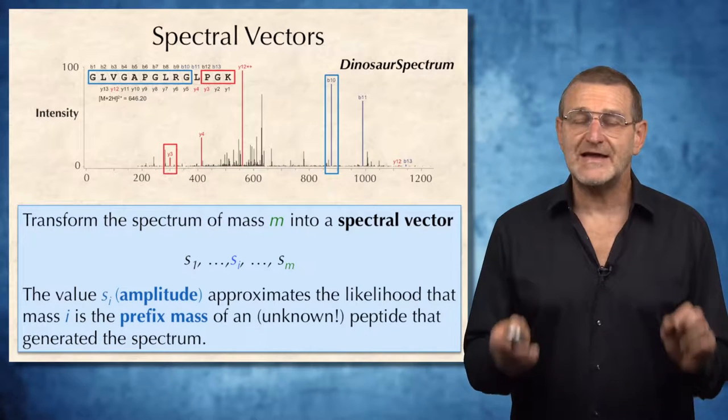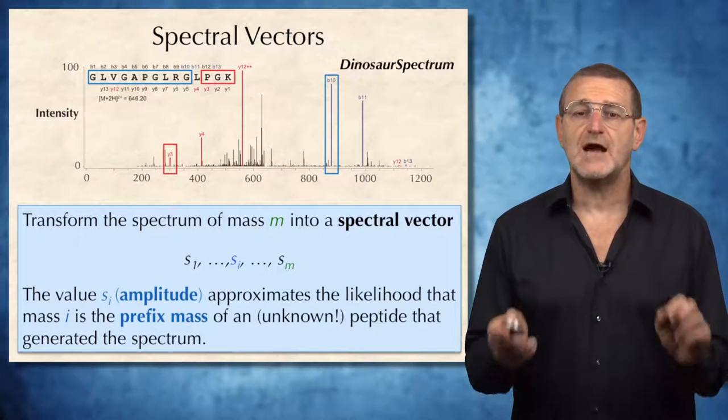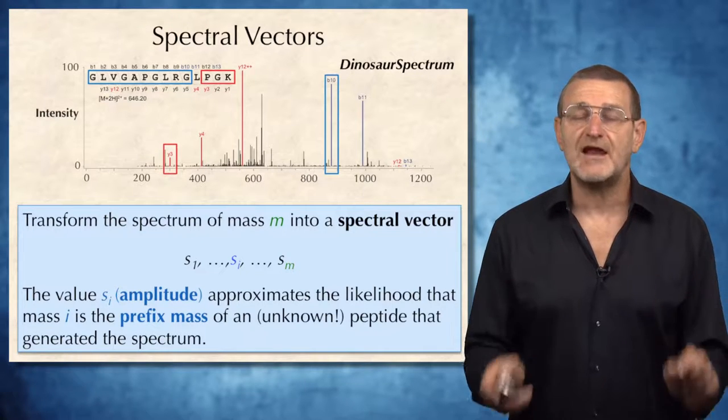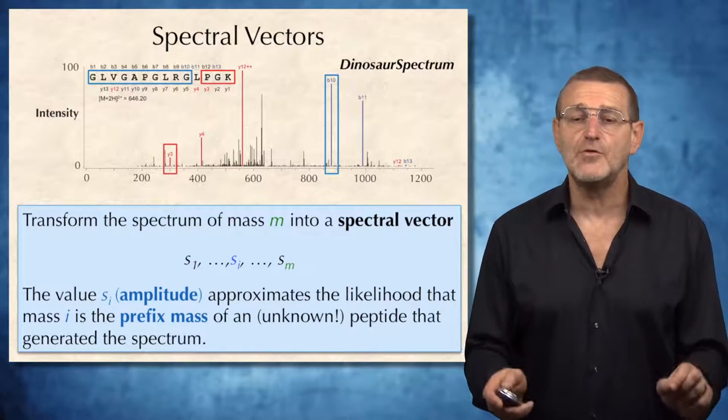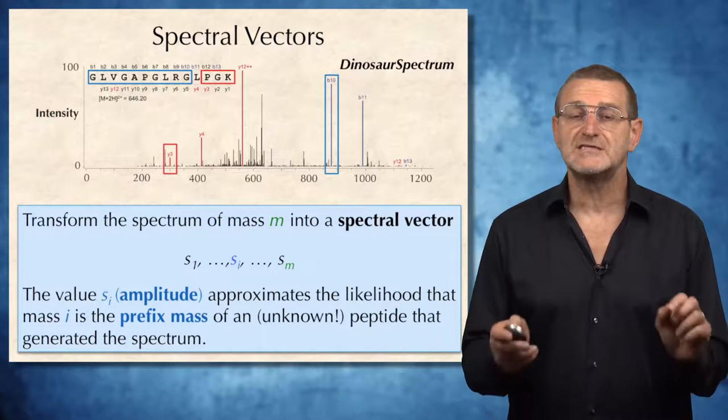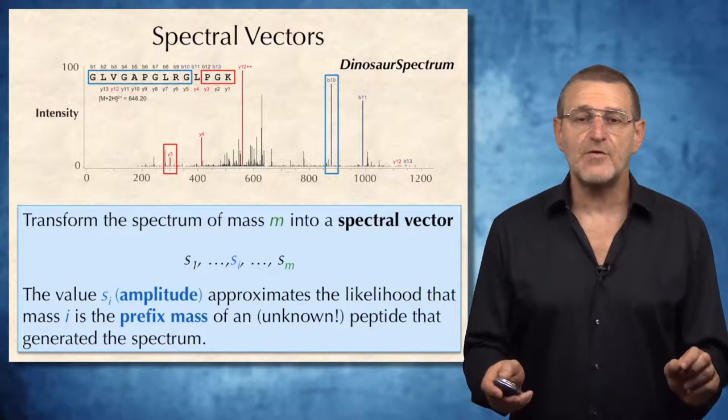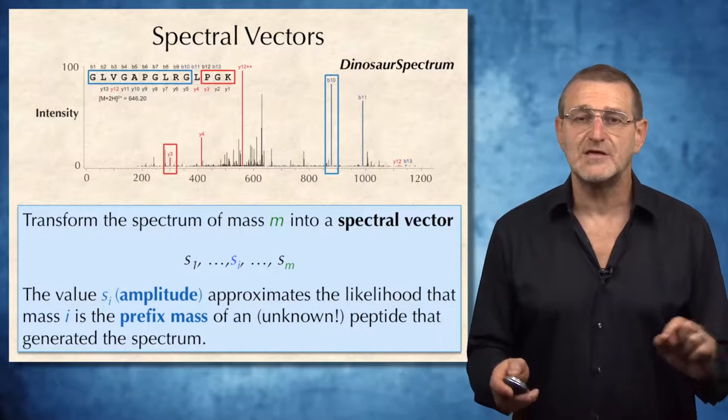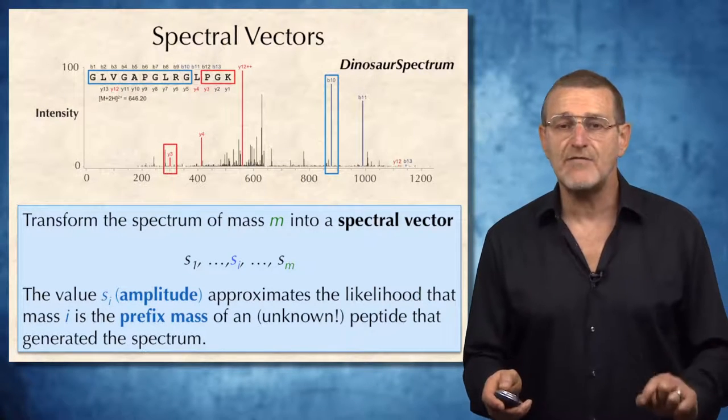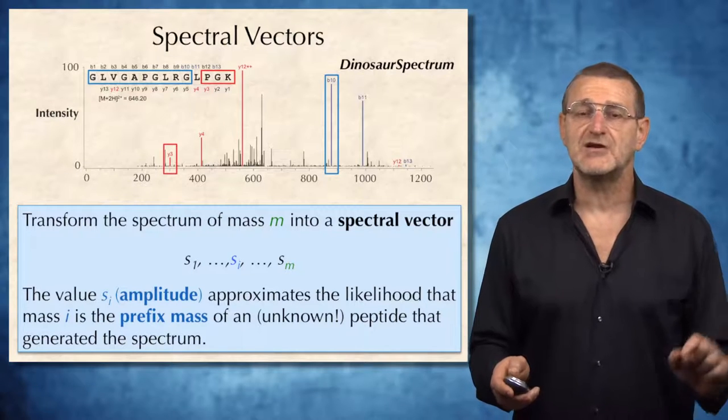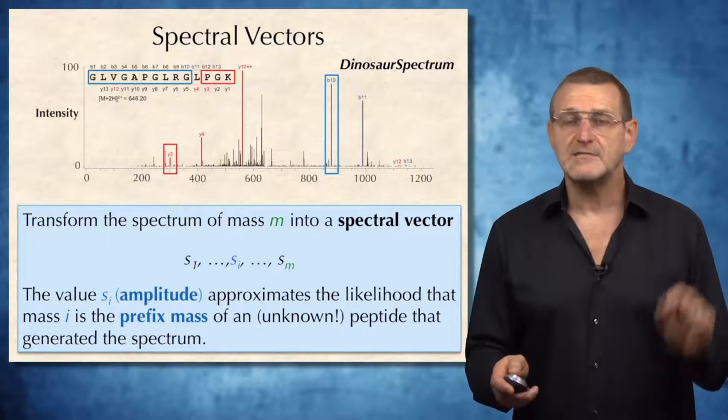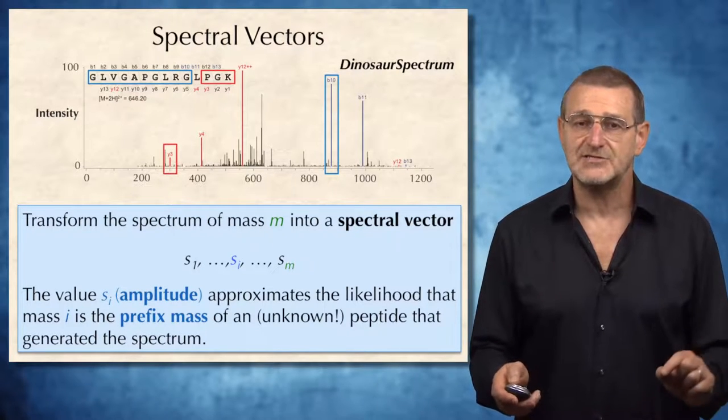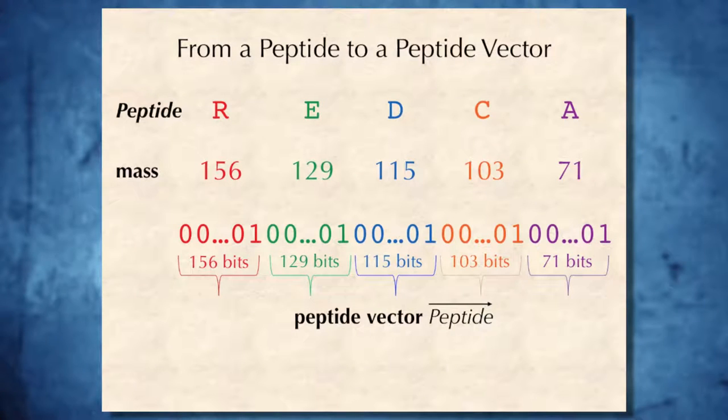The value Si, which is known as amplitude, approximates the likelihood that mass i is the prefix of an unknown peptide that generated the spectrum. You may be wondering, how can we transform a spectrum into a spectral vector if we don't know the peptides that generated the spectrum?